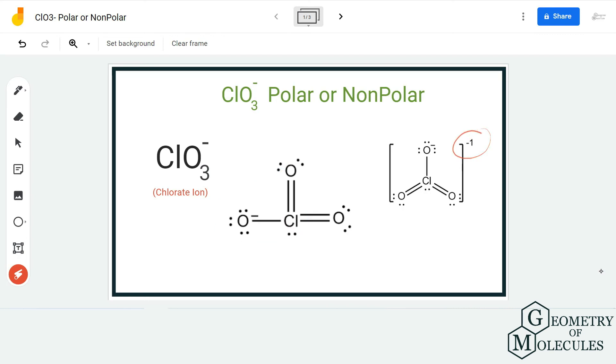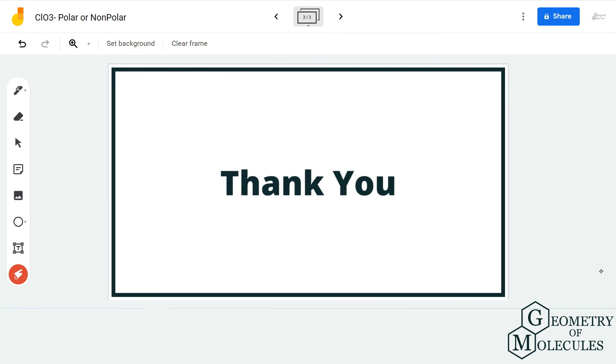Because of this asymmetry and because of this negative charge that this ion already has, this molecule is a polar one. I hope this video helps you understand. For more videos on Lewis structure, molecular geometry, and polarity of molecules, make sure to subscribe to our channel. Thank you for watching.